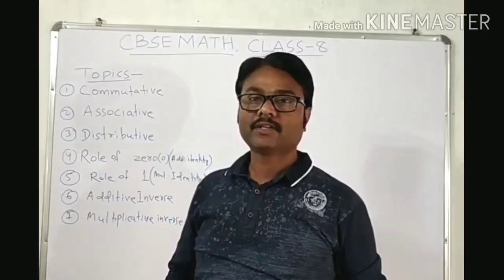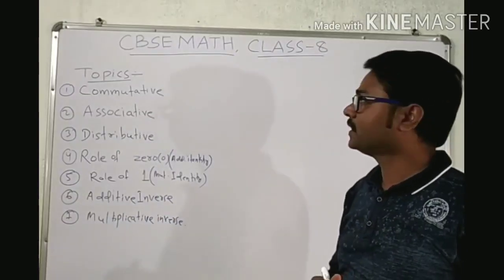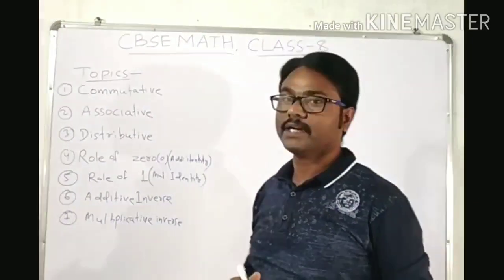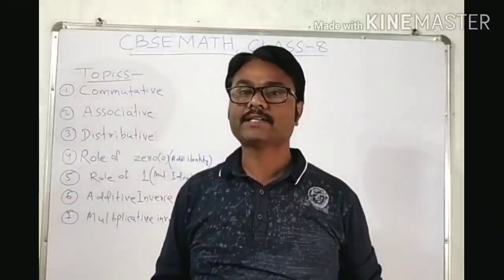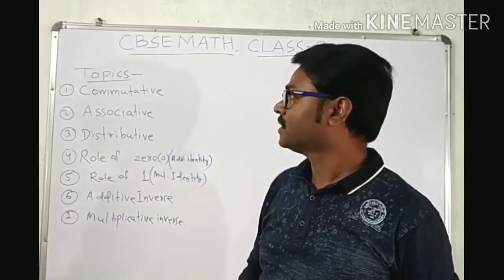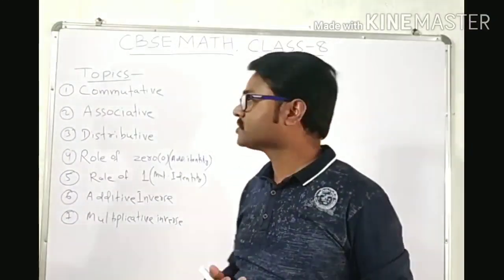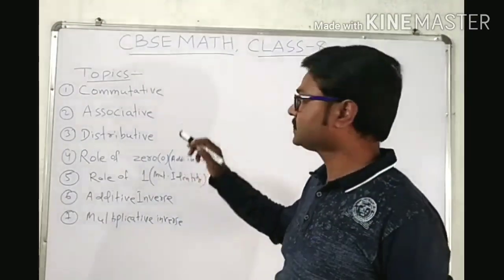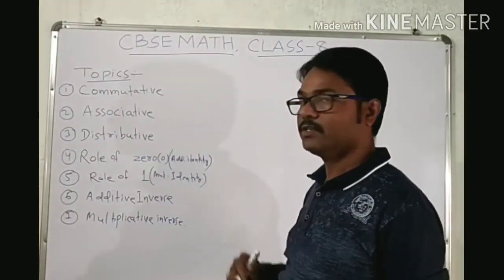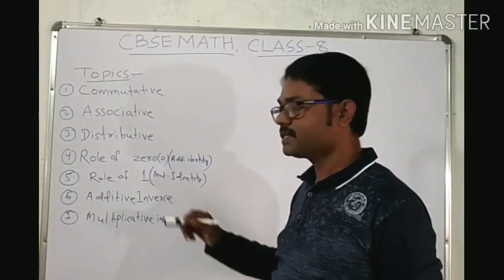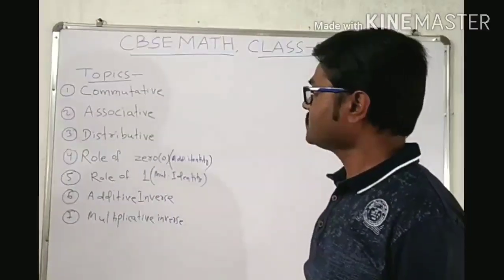Hello Children! Today we will start our CVSC Math Class 8. In the last video, we completed some topics: natural numbers, whole numbers, integers, and some properties of rational numbers. Today we will see commutative property, associative property, and distributive property. Also, the role of 0, role of 1, additive inverse, and multiplicative inverse. These are the topics we cover today. So let us start one by one.